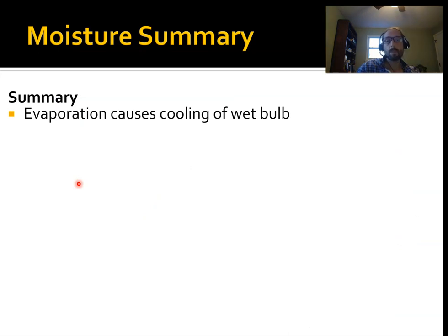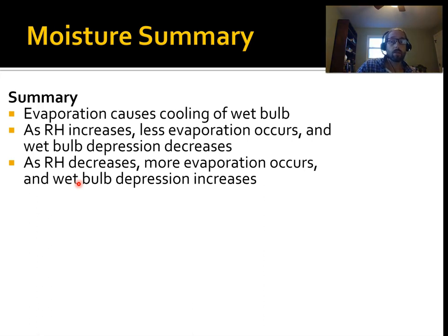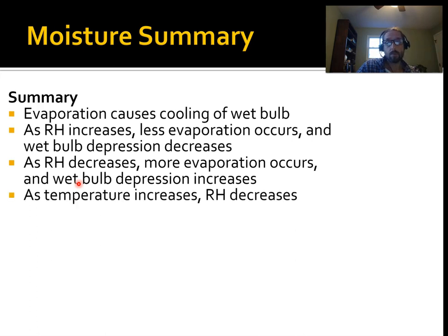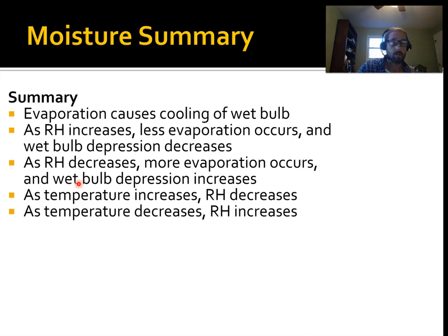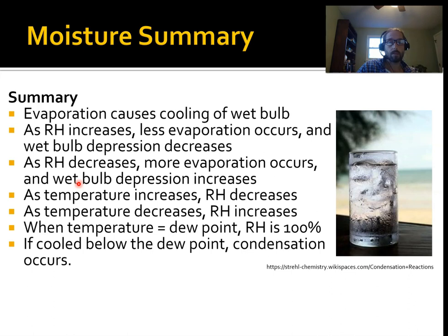To summarize these last two lessons: evaporation causes the cooling of the wet bulb with a sling psychrometer — evaporation causes cooling, that's really important. As relative humidity increases, you get less evaporation, so the wet bulb won't cool down as much and your wet bulb depression decreases. As relative humidity decreases, there's less moisture in the air, you get more evaporation, more cooling, and a bigger wet bulb depression — that's how a sling psychrometer works. As temperature increases, all else being equal, relative humidity decreases. As temperature decreases, relative humidity increases. When temperature reaches the dew point, you're at 100% relative humidity — full saturation — and that's when you get condensation to occur.